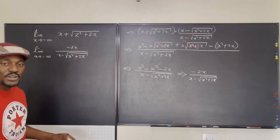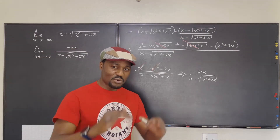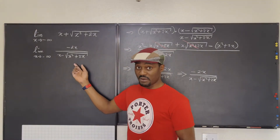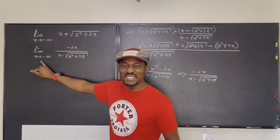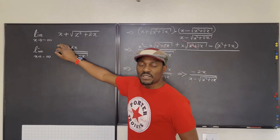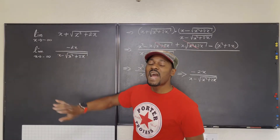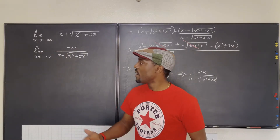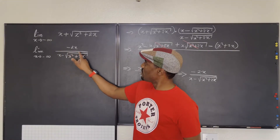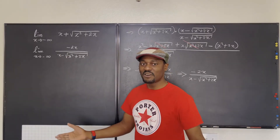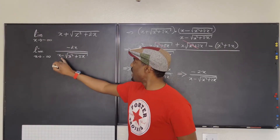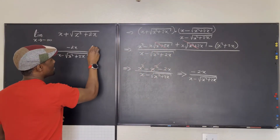Whenever you have a rational expression containing a radical term and x goes to infinity, you want to divide both the top and the bottom by the term in the denominator that has the highest exponent of x. Based on what we see, the highest exponent is 1, because the square root of x² is still x to the first. So we're going to divide both the top and the bottom by x.